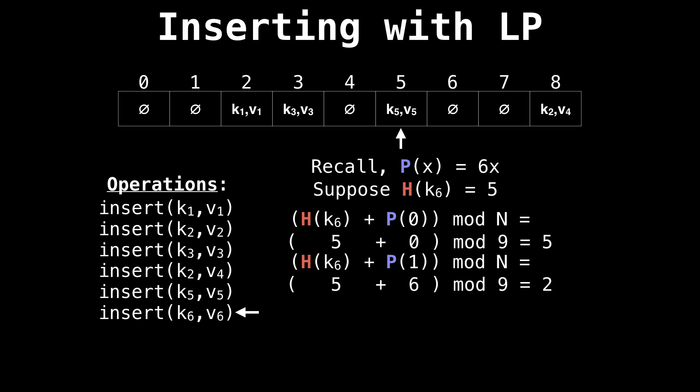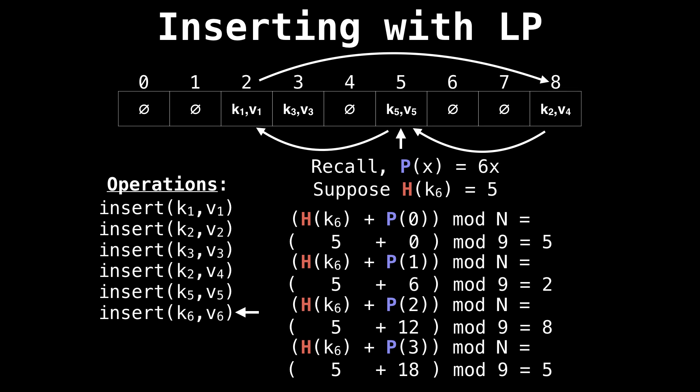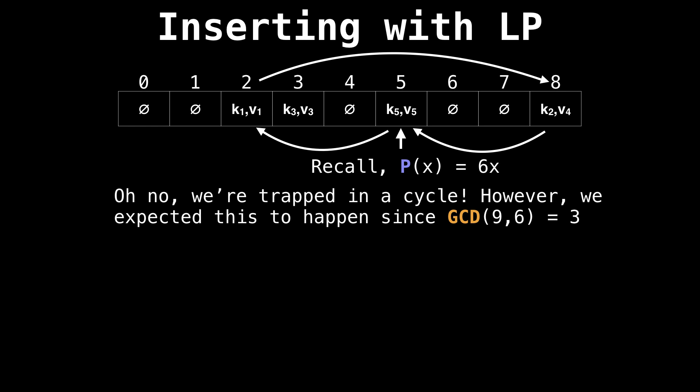Suppose k6 hashes to five. Five plus six mod nine gives us two. Hash collision, let's keep probing. Now five plus 12 mod nine equals eight. Another hash collision, so we have to increment x and keep probing, and now we're back to five. So we've hit a cycle. We're trapped in a cycle. But we kind of expected this to happen because we knew that we picked two numbers whose GCD was equal to three and not one.